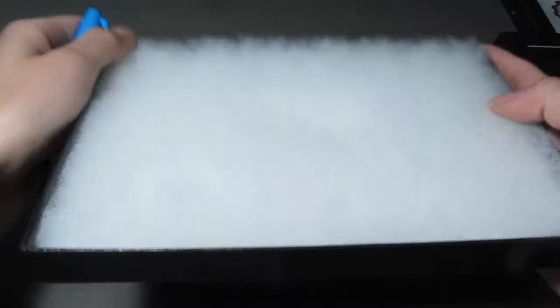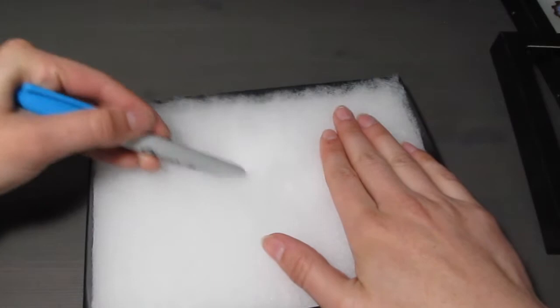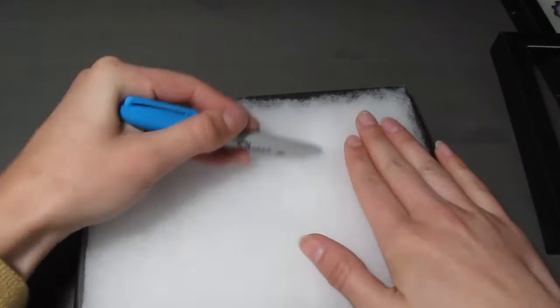For insects with larger abdomens like moths or cicadas, you'll need to make the indentation deeper in order to accommodate for the body. If you'd like to see a separate video tutorial on how to frame those types of insects, let me know in the comments below.